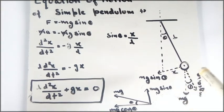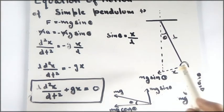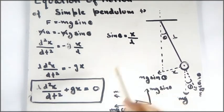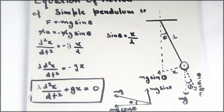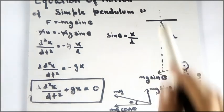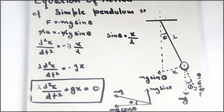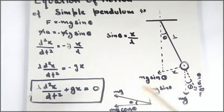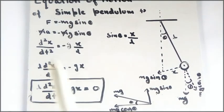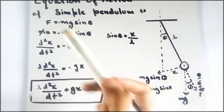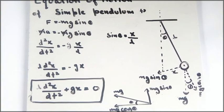and then mg sinθ will try to bring it back to the mean position. So mg sinθ is always acting to return the pendulum to its mean position, acting opposite to its motion — that is why it is taken as negative. This is what causes the oscillation.